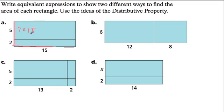Another way to think about it is to look at the smaller rectangles inside. We have a 2 by 15 rectangle here and then a 5 by 15 rectangle here. So another way of finding this area would be 2 times 15 added to 5 times 15.